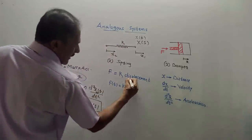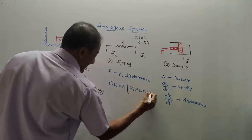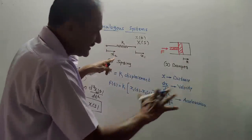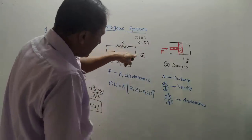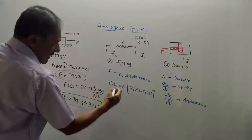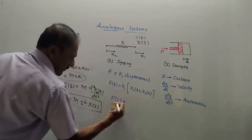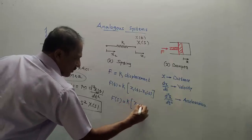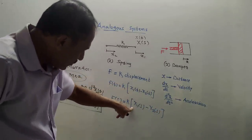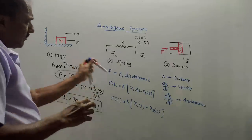K is constant, the spring constant. Displacement can be written as X1(t) minus X2(t), or X2(t) minus X1(t) — either way works since we don't know the direction of displacement. It may also happen that only one position changes, so only X1(t) will be there. This is the generalized expression. Now transforming to Laplace: F(S) = K·[X1(S) − X2(S)]. The key point: spring means K into displacement.